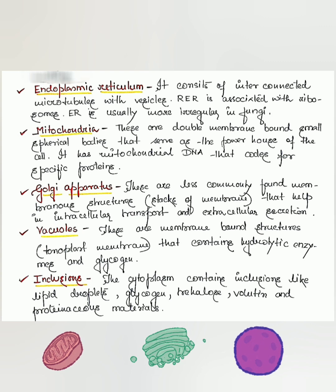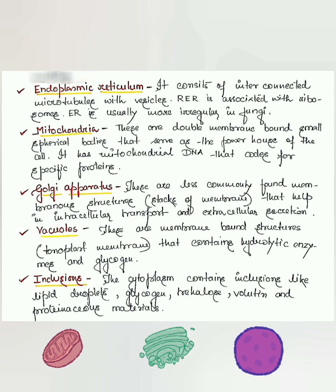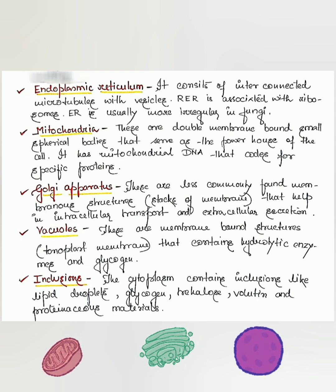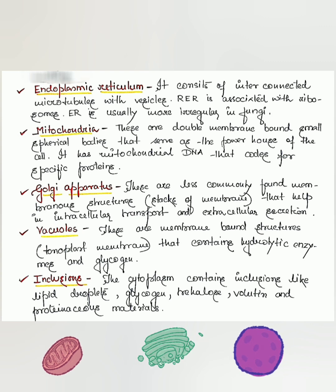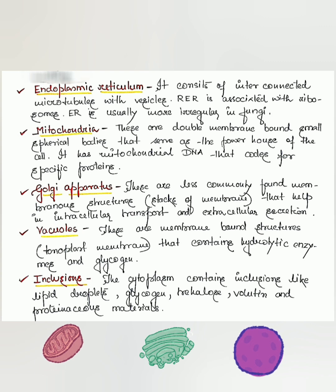The endoplasmic reticulum consists of interconnected microtubules with vesicles. Rough endoplasmic reticulum is associated with ribosomes — that is why it is called rough; otherwise it would be called smooth ER. The ER is usually more irregular in fungi compared to plant endoplasmic reticulum.